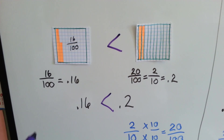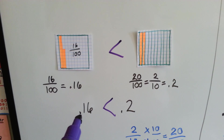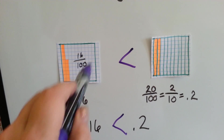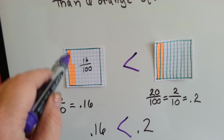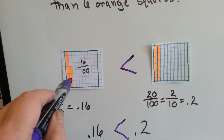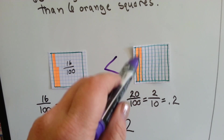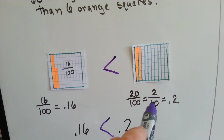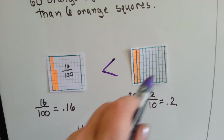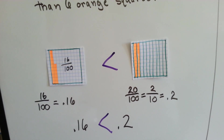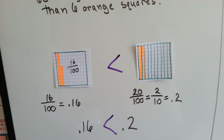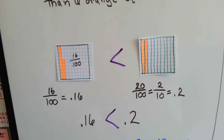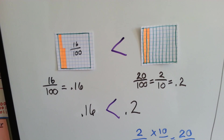Let's look at this one. Which is bigger — sixteen-hundredths or two-tenths? If we have a hundred boxes here, and this is sixteen one-hundredths, there are sixteen orange boxes filled in. Two-tenths is the same thing as taking the hundred and splitting it into ten bars — that's the two-tenths. But it's the same thing as twenty little one-hundredths boxes. So this one is actually more — it's more by four little boxes. Twenty is four more than sixteen, so two-tenths is greater than sixteen one-hundredths.